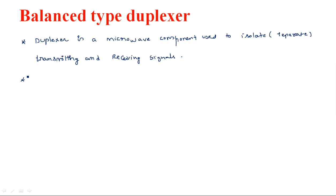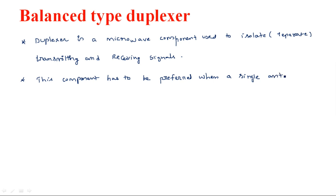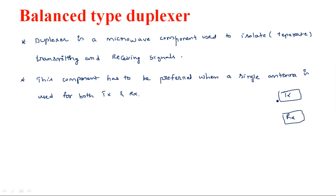For that purpose, we need to separate the transmitting and receiving signals. This component — the duplexer — is preferred when a single antenna is used for both transmitting and receiving. If we have a single antenna for both the transmitting and receiving sections, we should use a duplexer to separate these signals. Such duplexers are of two types.